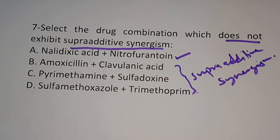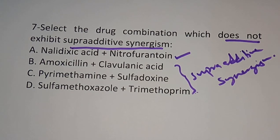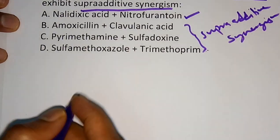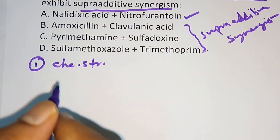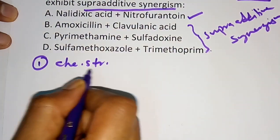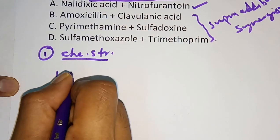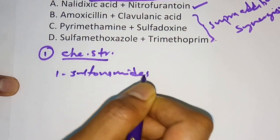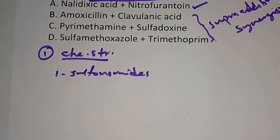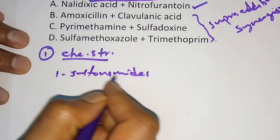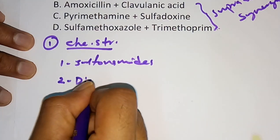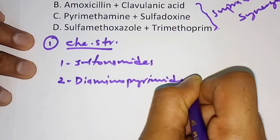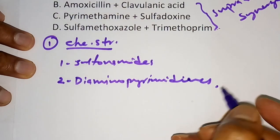Now for important points from this chapter on general consideration of antimicrobials. Antimicrobials are classified first based on chemical structure. Group one is sulfonamides and related drugs — examples include sulfadiazine, sulfones such as dapsone, and para-aminosalicylic acid. Group two is diaminopyrimidines — examples are trimethoprim and pyrimethamine.